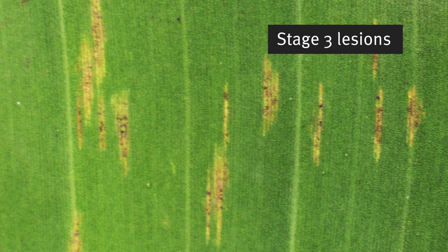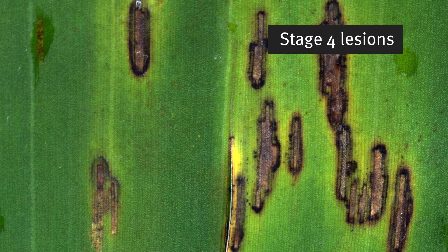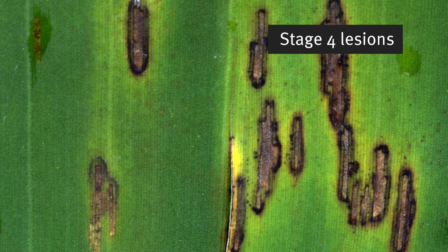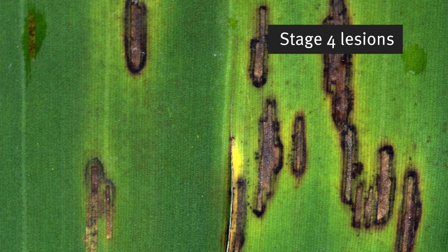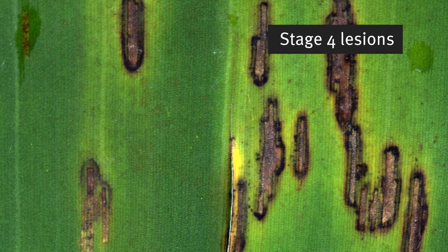Stage 3 is when the streaks broaden to become a spot which become longer and wider without a defined margin. Stage 4 is when the spots may be water-soaked in appearance and turn rusty red or brown. As the spots develop you will notice a definite dark brown edge, and the center becomes sunken and is sometimes surrounded with a yellow halo.